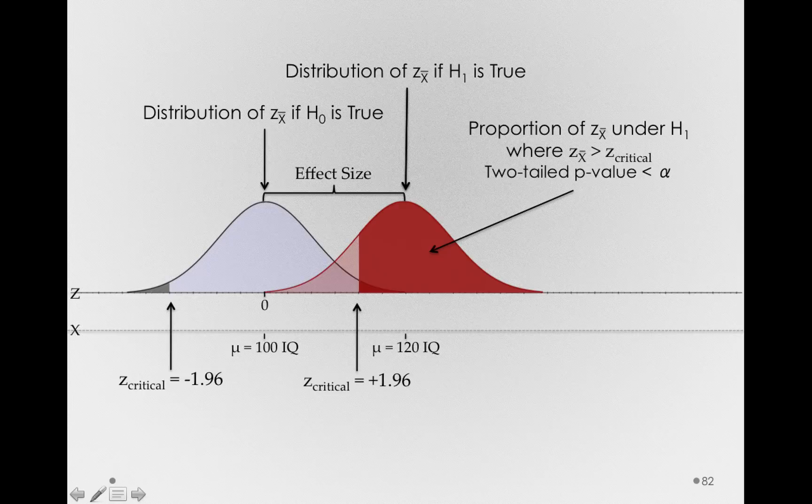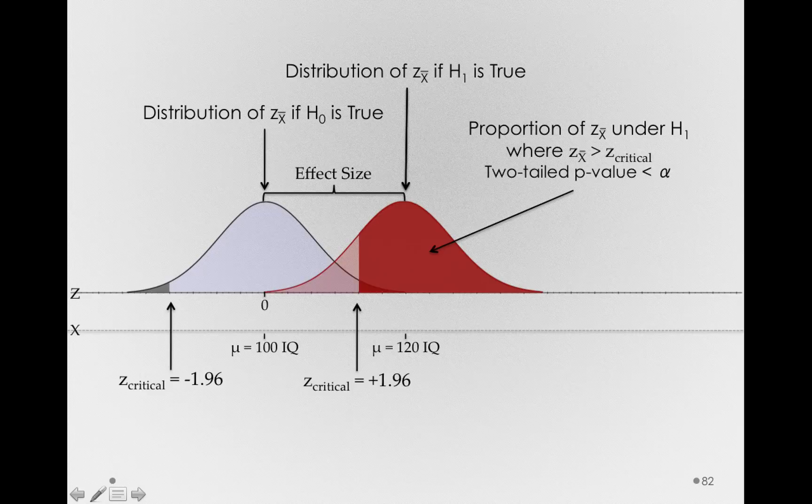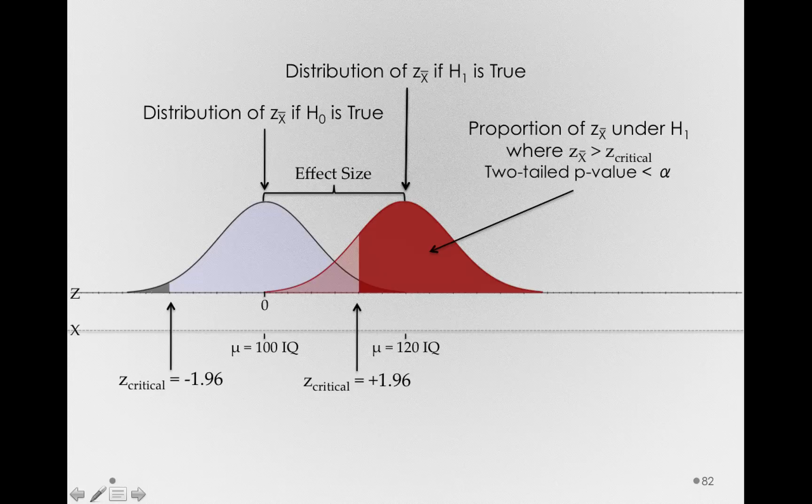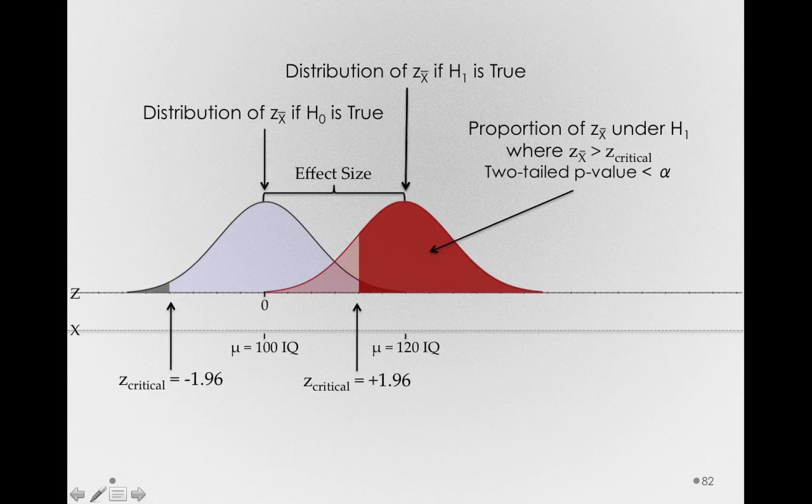And remember, any time we have a two-tailed p-value less than alpha, that's a situation where we reject the null hypothesis. So these are the samples where we'll actually say there's a real effect in the world. These are the samples where we've detected that real effect.